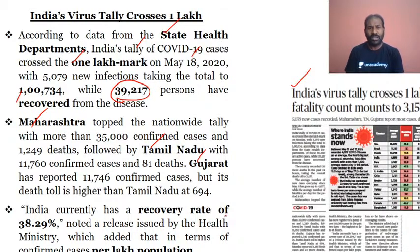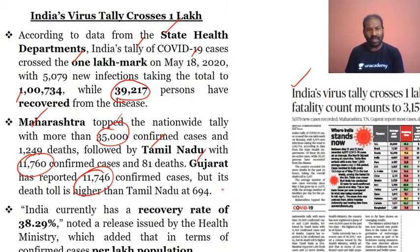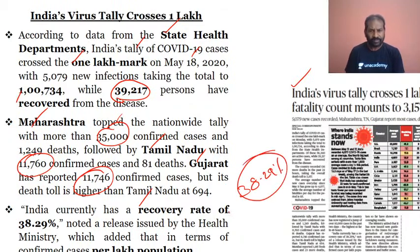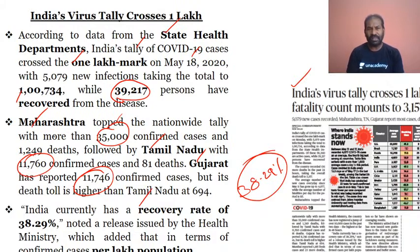Maharashtra, Tamil Nadu, and Gujarat are the states with the maximum tally. Maharashtra is topping the nation's tally with 35,000 cases, Tamil Nadu with 11,760 confirmed cases, and Gujarat with 11,746 cases. These states are at the highest ranking in regards to infected cases due to SARS-CoV-2. The recovery rate stands at 38.29%. Compared to India's 1.33 billion population, the infected cases are comparatively low compared to other countries.